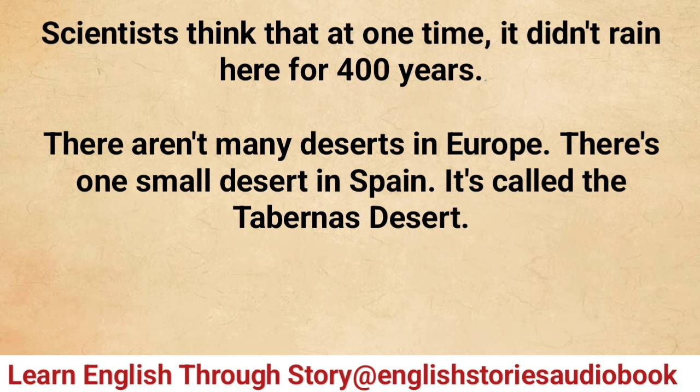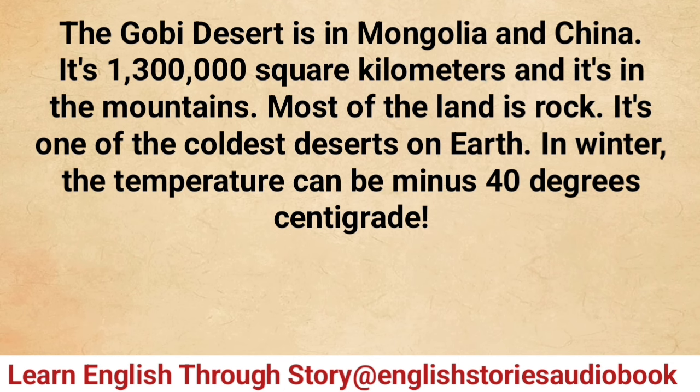There aren't many deserts in Europe — there's one small desert in Spain called the Tabernas Desert. The Gobi Desert is in Mongolia and China. It's one million three hundred thousand square kilometers and it's in the mountains. Most of the land is rock.